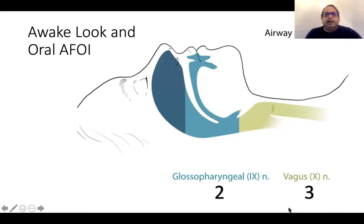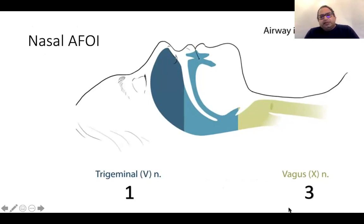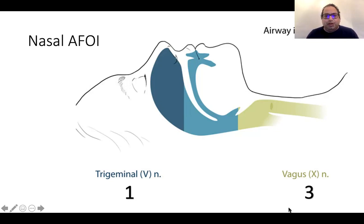For awake video laryngoscopy or oral awake fibreoptic intubation, we go through the oropharyngeal route to the trachea, so we need to block the glossopharyngeal nerve and the vagus nerve. For nasal awake fibreoptic intubation, you need to block the trigeminal nerve branches and the vagus. Blocking the oropharyngeal area can be avoided unless you need to pull the tongue — that's relevant when the patient is mildly sedated and the tongue is falling back.